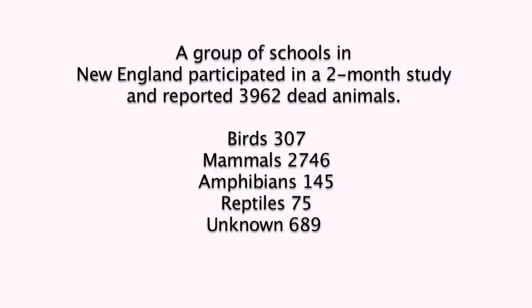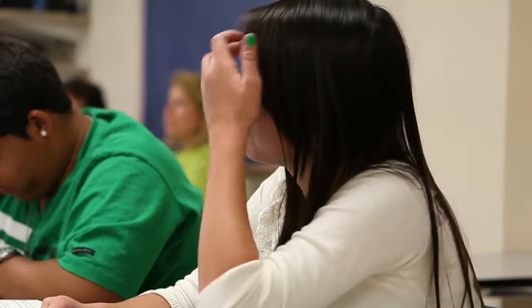So I would like for us to revisit one of the pieces of data we looked at a few minutes ago — the roadkill data from New England. What I would like you to do is discuss in your groups for just a minute or two how you would best display that data. Talk among yourselves and figure out which is the best display.